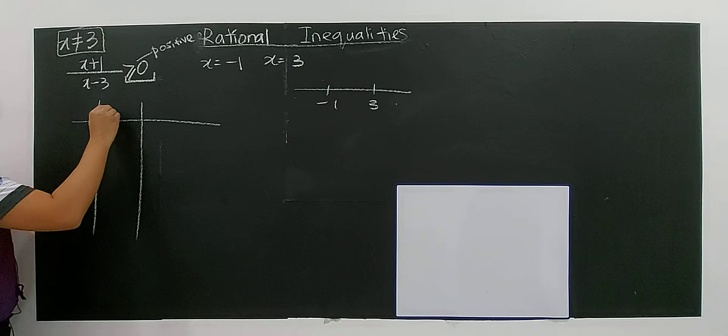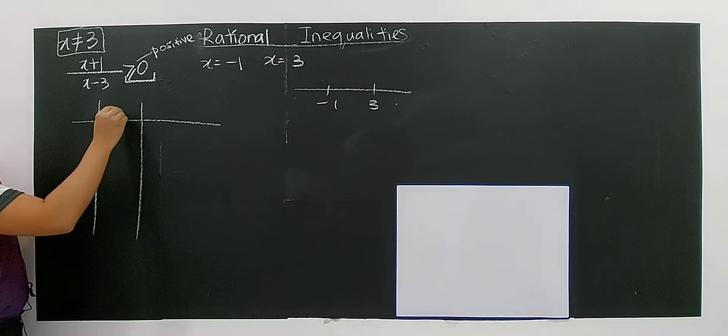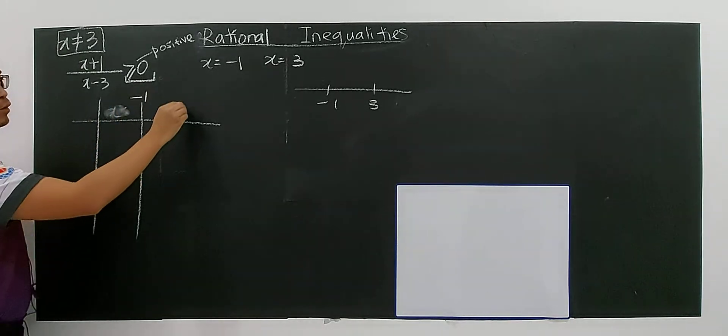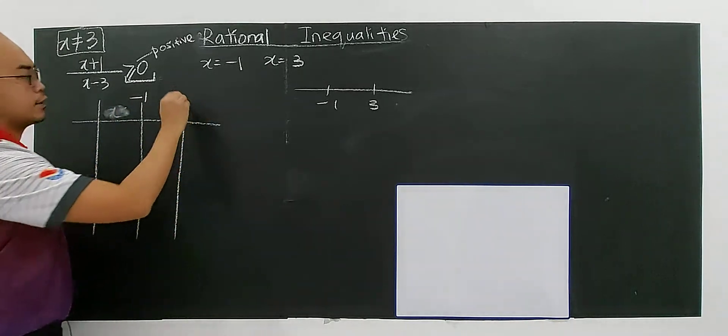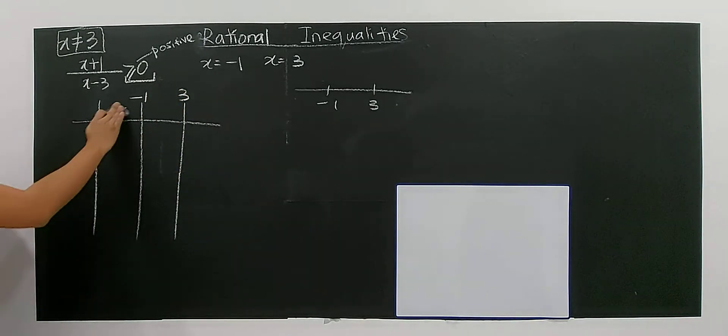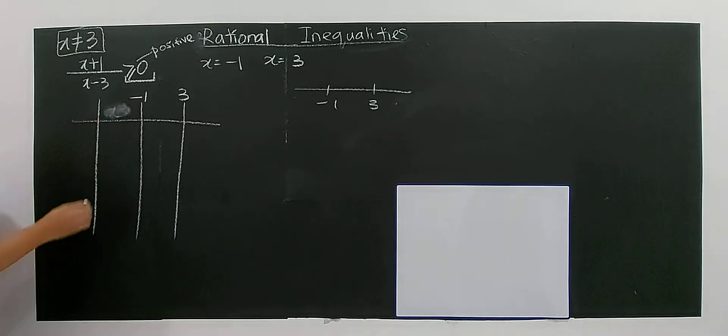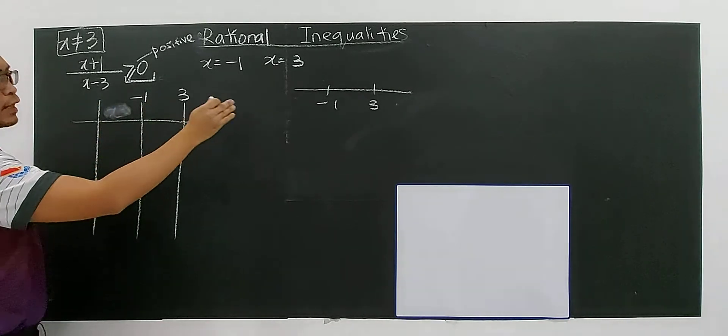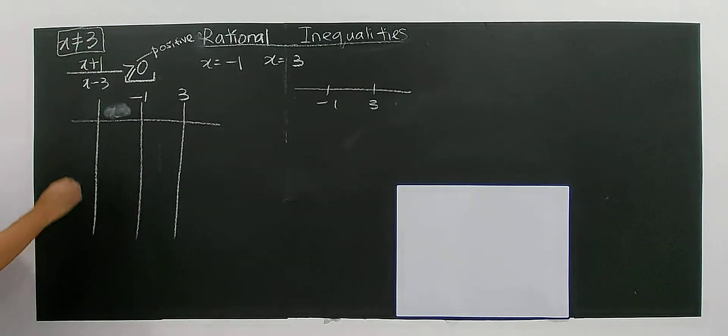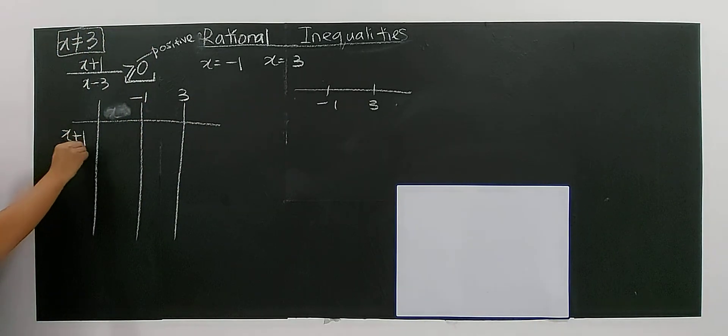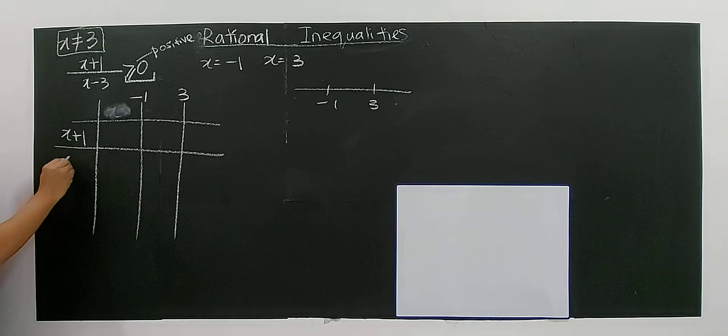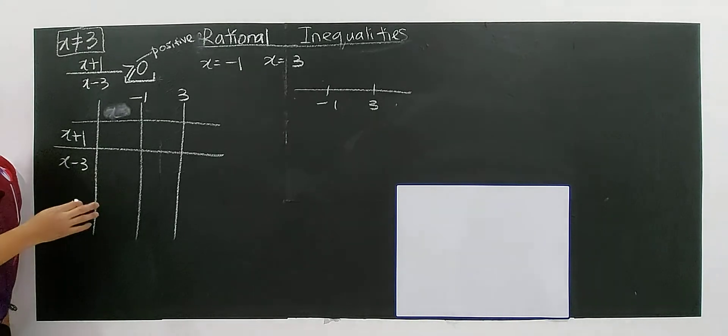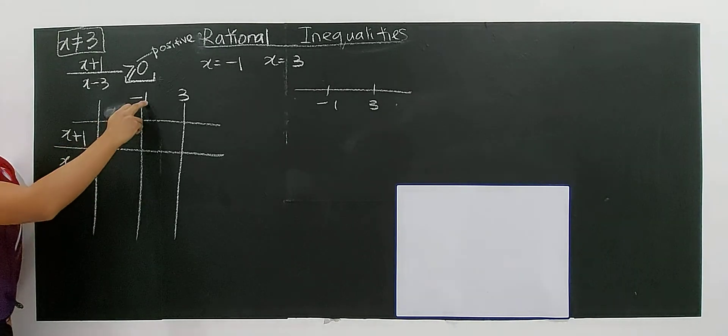First I draw out a table which is divided into three regions: negative one and three. This is the region where x is less than negative one, between negative one to three, and after three. So I can put x plus one divided by x minus three.